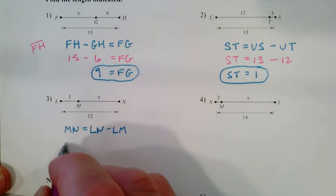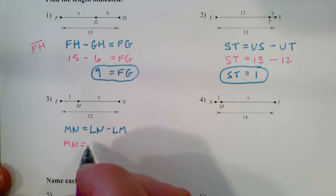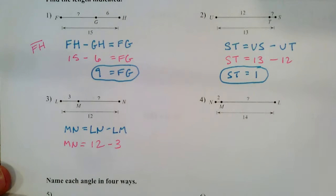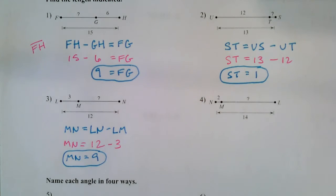So MN equals, let's see, LN is 12, and LM is 3. So 12 minus 3, MN equals 9. I'll leave that last one up to you. Moving on here,